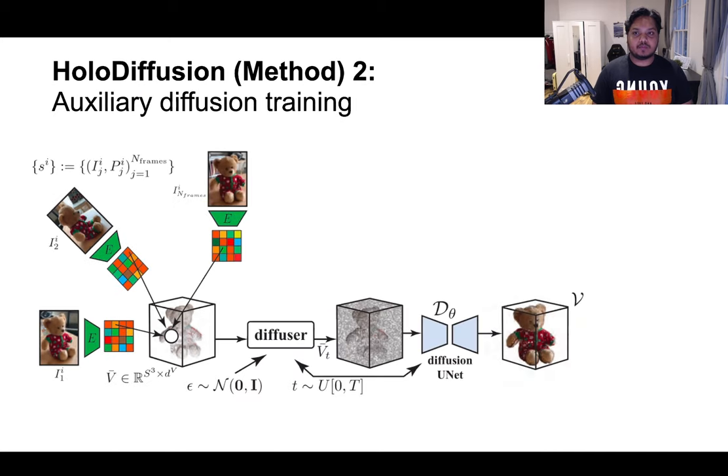Having obtained the approximate feature voxel grid V-bar, we then proceed with our slightly modified denoising diffusion training step. The voxel grid is first noised or diffused with randomly sampled amount of noise for the t-th time step to obtain the diffused feature voxel grid V-bar T.